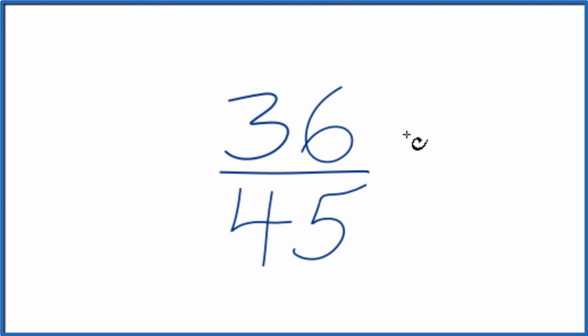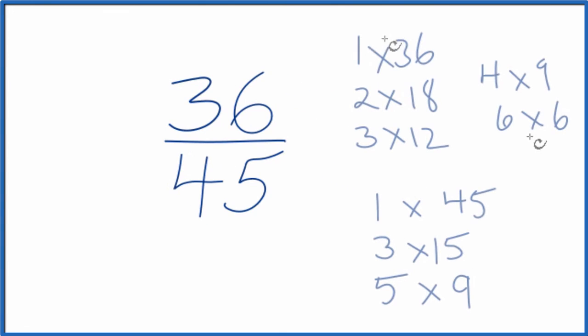To do that, we need to find a common number that goes into both 36 and 45. We're looking for the greatest common multiple. Let's list the factors of 36 and 45 first. So when we look at the factors here for 36 and for 45, the largest number is 9, so that's going to be our greatest common multiple.